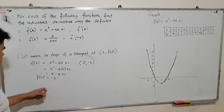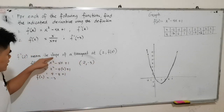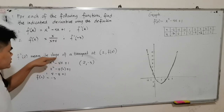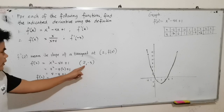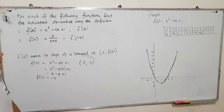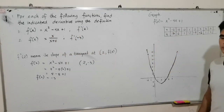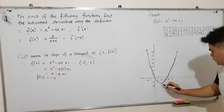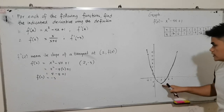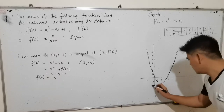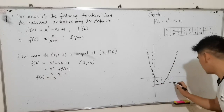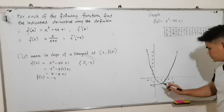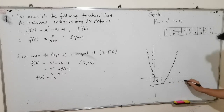We now have an ordered pair 2 and negative 3, through which the tangent line passes. Looking at the graph of f(x) = x squared minus 4x plus 1, at the point 2 comma negative 3, the tangent line is a horizontal line. Since it is a horizontal line, we expect that the slope is 0.